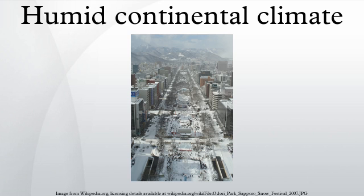A humid continental climate is a climatic region typified by large seasonal temperature differences, with warm to hot summers and cold winters. Precipitation is relatively well distributed year-round in many areas with this climate, while others may see a marked reduction in wintry precipitation and even a wintertime drought.